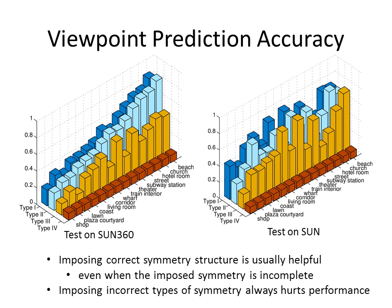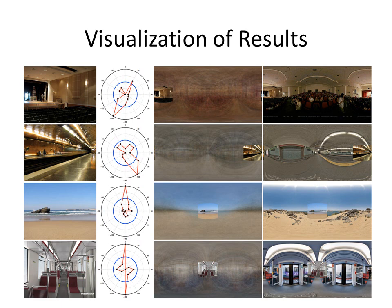Here is a visualization of the performance when we assume different types of symmetry structure. We can see that imposing the correct symmetry structure is usually helpful, even when the imposed symmetry is incomplete. However, imposing incorrect types of symmetry always hurts performance. Here are some visualizations of the results. The first column shows the test photo used as input. The second column shows the viewpoint predictions using a compass-like representation, where values are scores from the SVM viewpoint classifier. The last two columns illustrate the predicted viewpoint and the extrapolated scene layout: one using the averaged panorama from the place category, and one using the nearest neighbor from the training set.